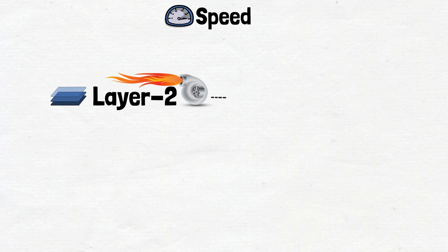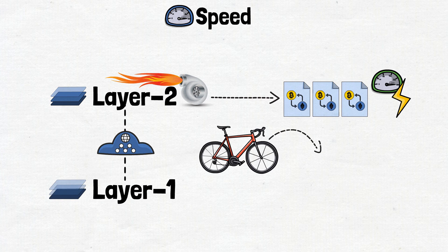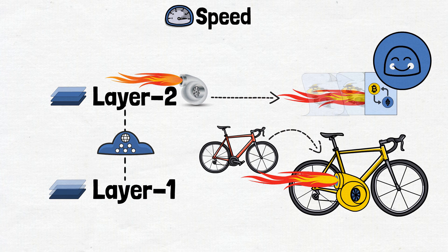Layer 2 solutions are like turbochargers for transactions. By offloading some tasks from Layer 1, they enable faster and near-instantaneous transactions. It's like upgrading from a regular bicycle to a rocket-powered one. Transactions zoom by at lightning speed, making the user experience smooth and swift.